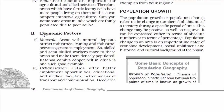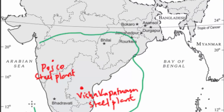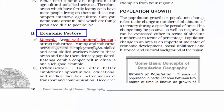Now coming to the second factor: economic factors. Whenever the economic word comes, we are directly referring to businesses, profit, loss, wages, and income. The first one under this is minerals — areas with mineral deposits attract industries. Take a look at all the iron and steel industries in India; you will find the majority of them in the regions of the Peninsular Plateau or Chhota Nagpur Plateau, which are rich in iron ore. Mining and industrial activities generate employment.